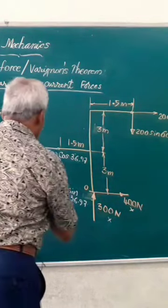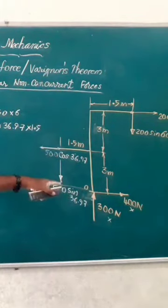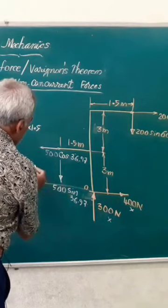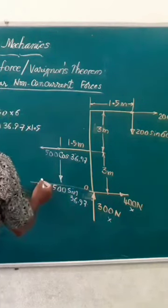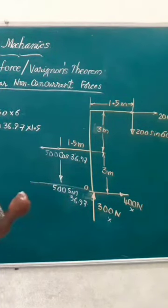So it has to act from this point. The resultant value is 200 Newton, and that should produce a moment of r into x. That will be acting somewhere here because the value of theta is negative.